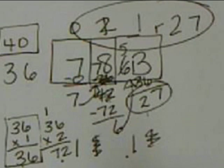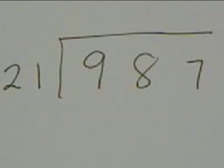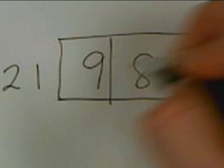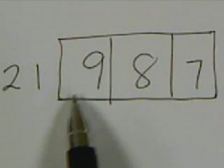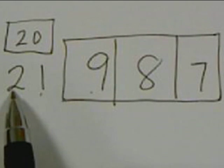For this next problem we're going to have 987 divided by 21. We're going to box it up again, then estimate. Our magic number is 20 because 1 is less than 5, so the 2 stays the same and 21 rounds to 20.